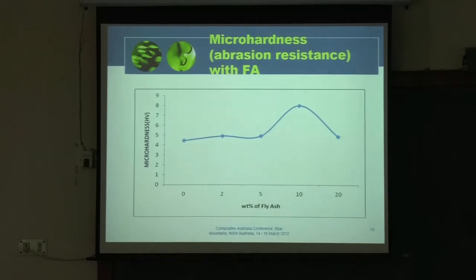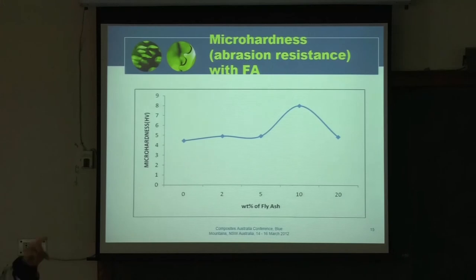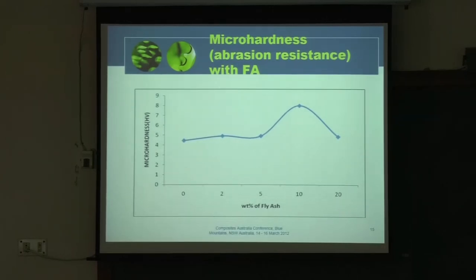Micro hardness does not seem to be affected much by up to 5 weight percent fly ash. But micro hardness gets about double at around 8 weight percent fly ash. What micro hardness does is measure the resistance to indentation over a very small area — when the diamond indenter tries to go in, the material pushes it back, indicating it is not allowing more depth. The 10 percent fly ash sample gives a clear indication of improved micro hardness.